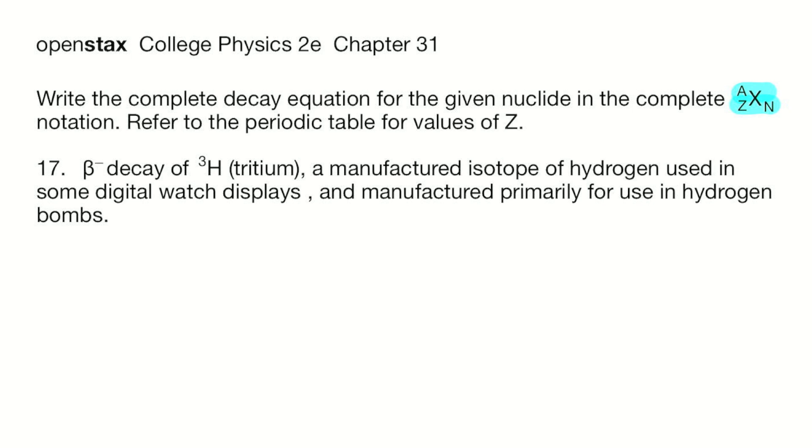So we have A, Z, X, and N, where X is the parent nuclide. It decays into the daughter nuclide Y with the same A, but one more proton, so Z plus 1, and then one less neutron, so N minus 1.